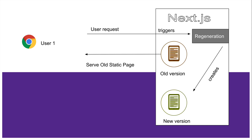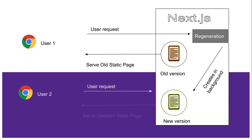However, the first user on the first request is going to get the old static page and not the new version. After this request, any subsequent request — let's say user 2 makes a request — user 2 will get the updated static page. So this is the basic concept of Incremental Static Regeneration: a user request triggers a page to be regenerated in the background, which becomes the updated version.